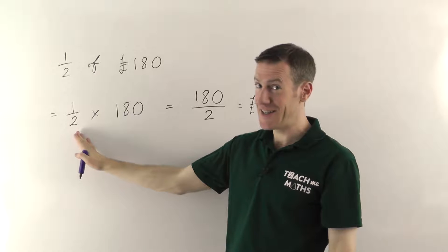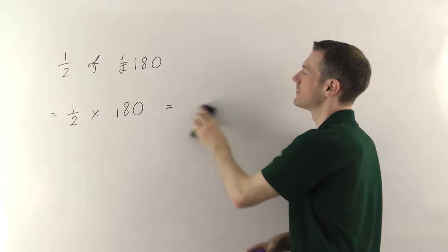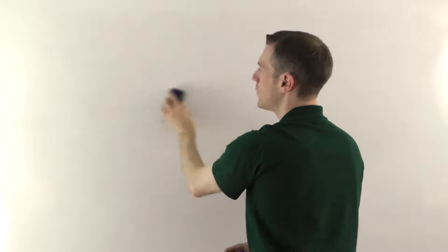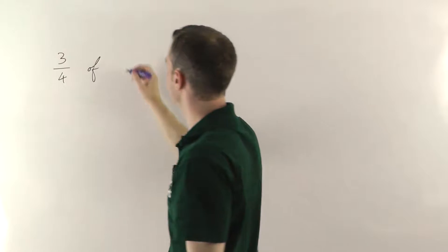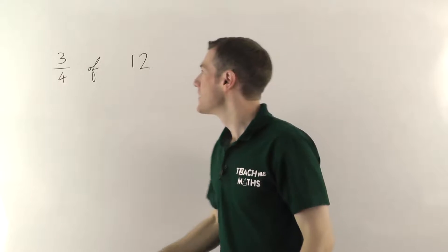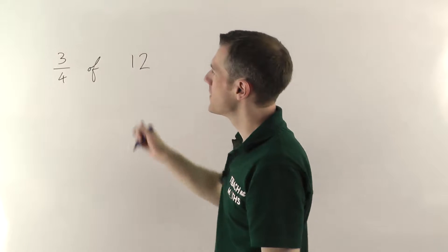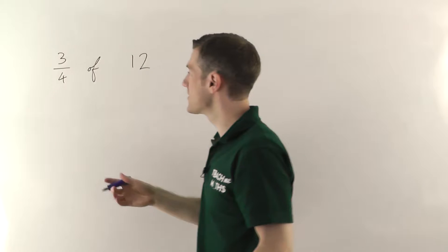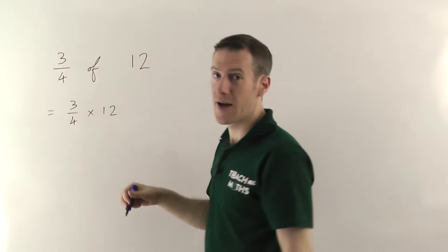Now that's fine when it's nice easy numbers like a half, but what happens if you have a slightly more difficult fraction? So we'll find 3 quarters of 12. This isn't money — you can find a fraction of whatever you like, maybe 12 pounds of flour or something. You need 3 quarters of 12. Remember, 'of' in maths always means times, so what you're really finding here is 3 quarters times 12.